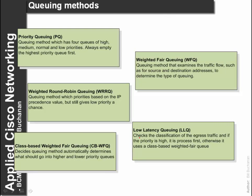Once we have tagged or identified the traffic, we can define the queuing method. One of the most useful methods is called priority queuing. With priority queuing we have 4 different levels of queue: high, medium, normal and low. Data packets that come into queue 1 will always be serviced first; once those are empty the system moves to the second queue, then the third. If a data packet arrives for the first queue it automatically goes back to queue 1. Only when the other three queues are empty will it get to queue 4. This is excellent for prioritising voice traffic in the high queue.